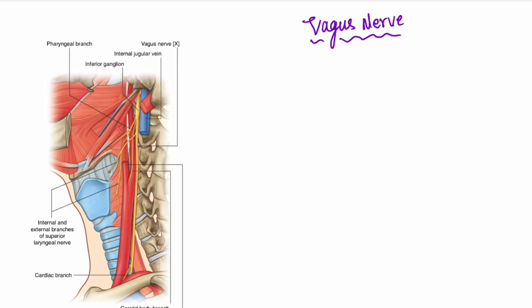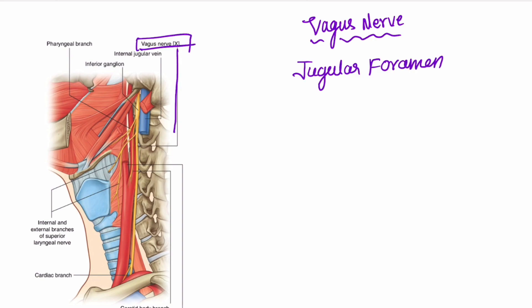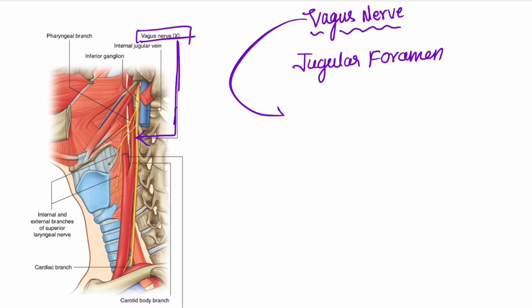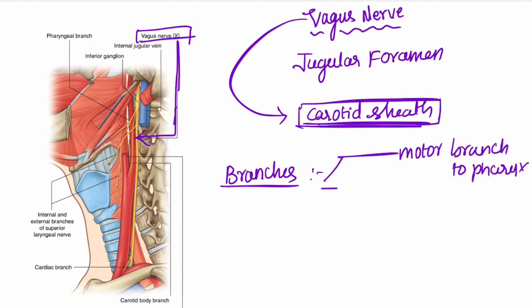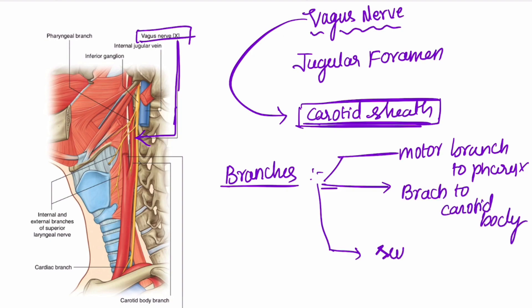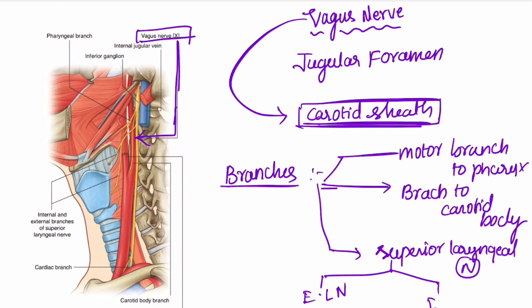The vagus nerve also exits the cranial cavity through the jugular foramen. It is a content of the carotid sheath. Its branches include a motor branch to the pharynx, a branch to the carotid body, and it gives rise to the superior laryngeal nerve, which in turn divides into the external laryngeal nerve and the internal laryngeal nerve.